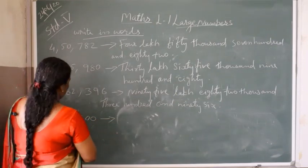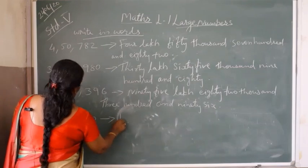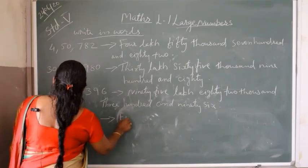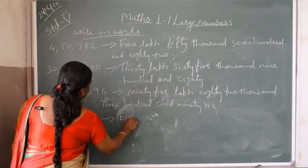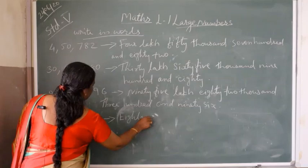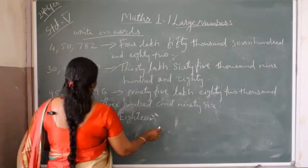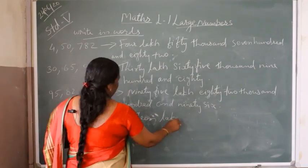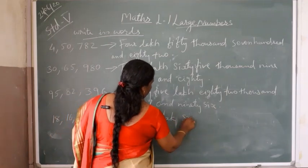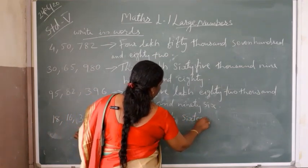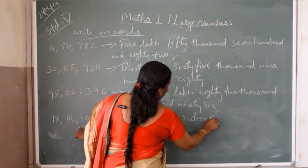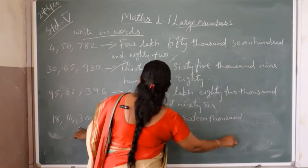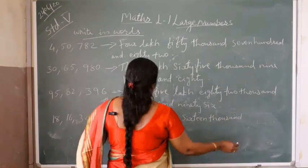Next: eighteen lakh sixteen thousand and three hundred — 18,16,300.